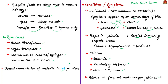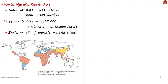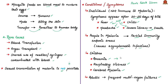Anemia is a condition in which there is a deficiency of red cells or hemoglobin in the blood. Cerebral malaria is a neurological complication characterized by coma and asexual forms of the parasite on peripheral blood smears.